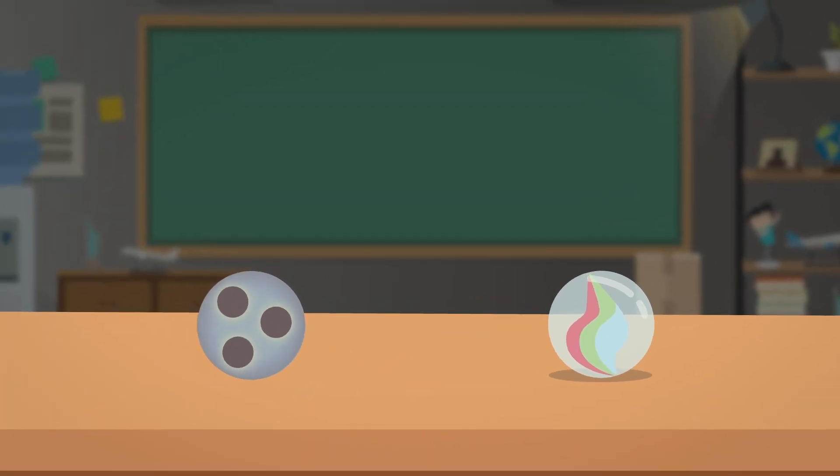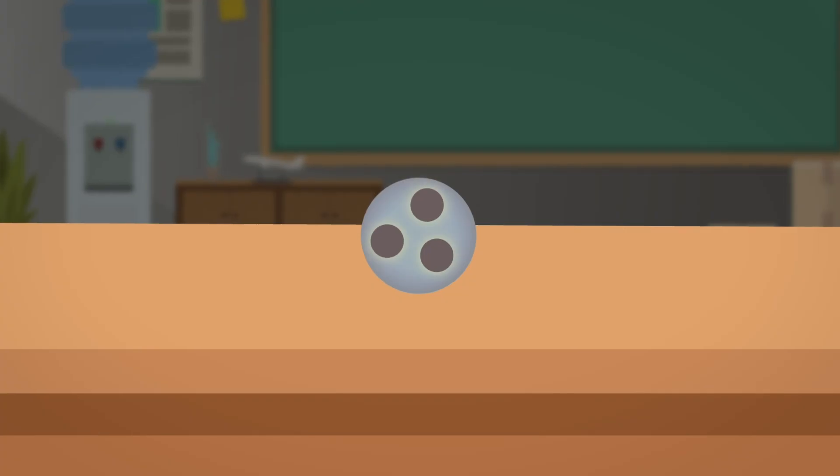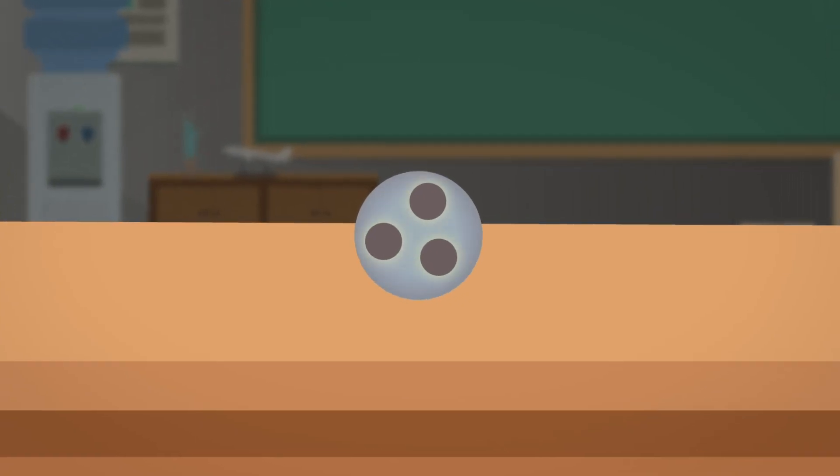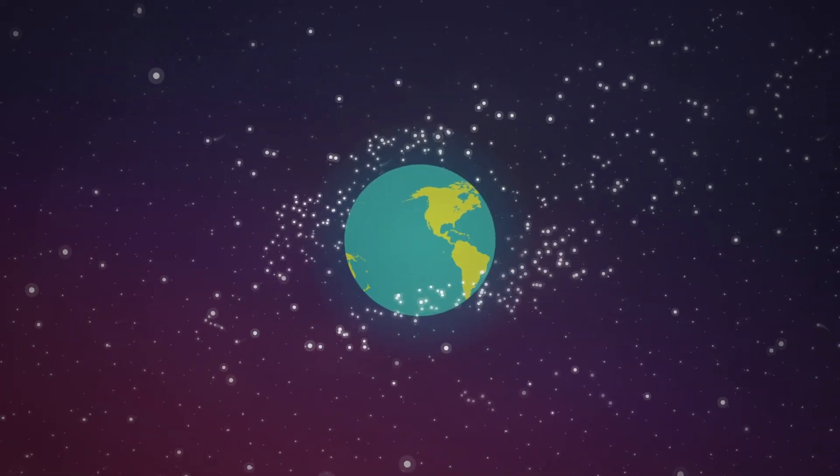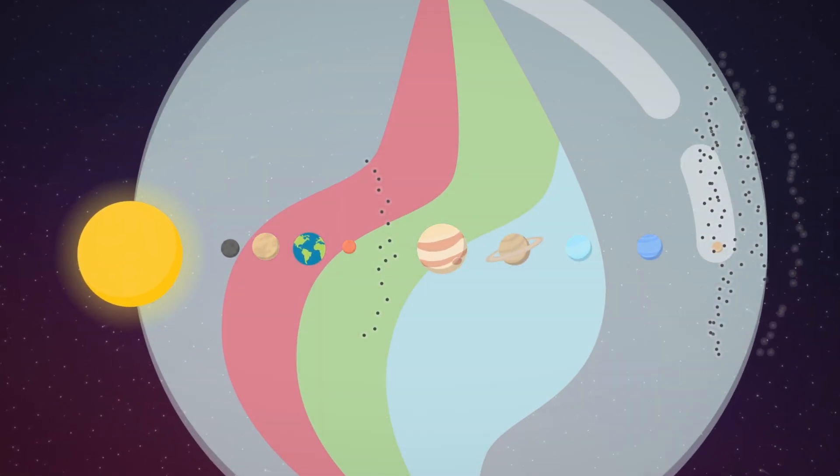guess how big the atom would be? The atom would cover the distance from New York to Florida. From the quark's point of view, our marble would be not just as big as Earth, not as big as the Sun, but almost as big as our entire solar system.